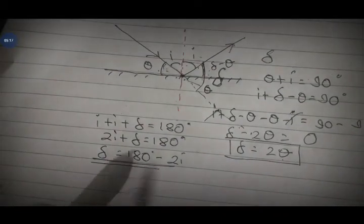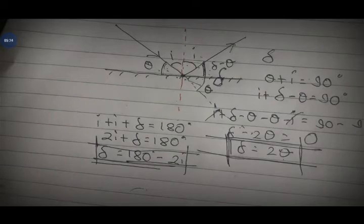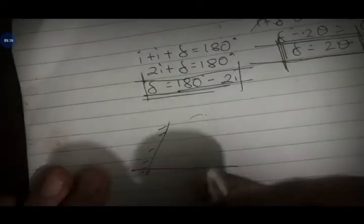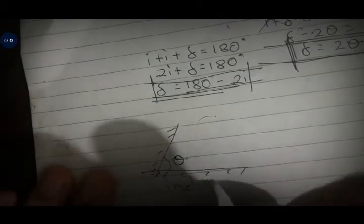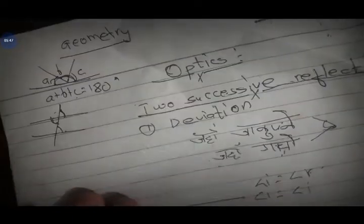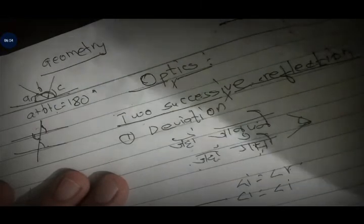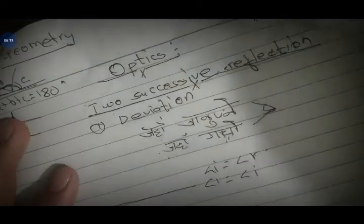When the incident angle gives deviation as 180 minus 2i, that is the formula. Now, for two plane mirrors: if you have two plane mirrors inclined at a certain angle, after two successive reflections from the two inclined plane mirrors, we need to find the total deviation.